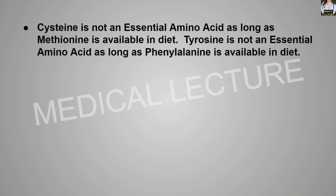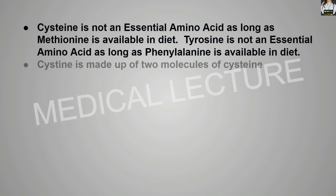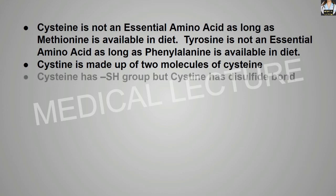Cysteine is not an essential amino acid as long as methionine is available in the diet. Tyrosine is not an essential amino acid as long as phenylalanine is available in the diet. Cystine is made up of two molecules of cysteine. Cysteine has a sulfhydryl group, while cystine has a disulfide bond.